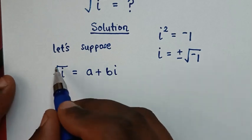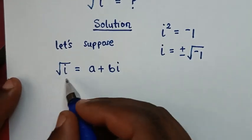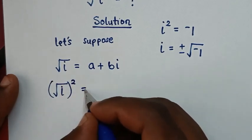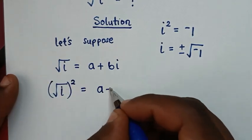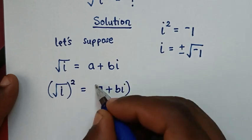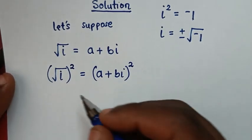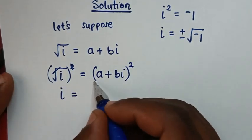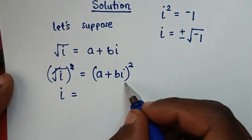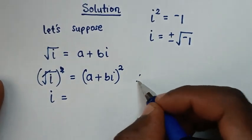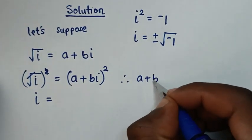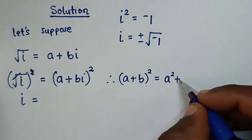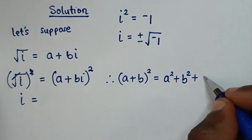Now, to remove this square root, we'll square both sides. So from this side, which is square root of i, we square, and this side, which is a plus bi, we also square. This square root will cancel with the square, then it will be i is equal to — this is in the form of the rule, so we'll apply the rule which is (a + b)² = a² + b² + 2ab.